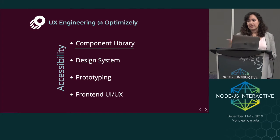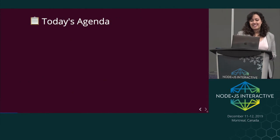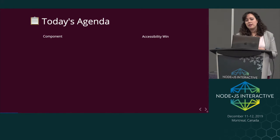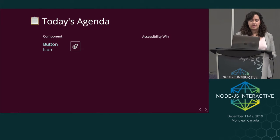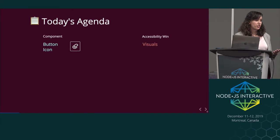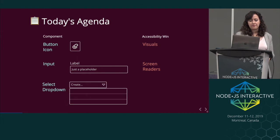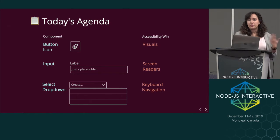Given that my world revolves around components and accessibility, you'll probably understand the title of this talk. Today we'll be going over three different components and the accessibility win you can get by making a few tweaks to the underlying code: button icon and how this can improve visuals especially contrast, inputs and what this means for screen readers, and a custom select dropdown and how you need to do work for keyboard navigation.